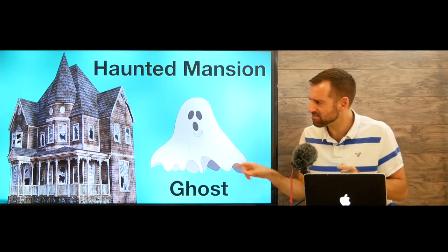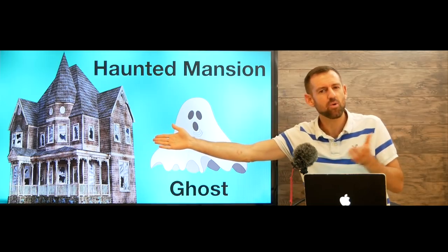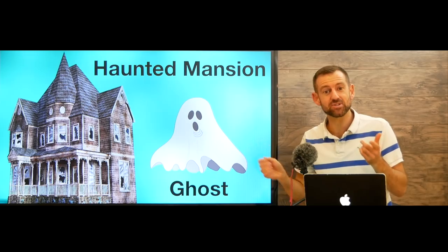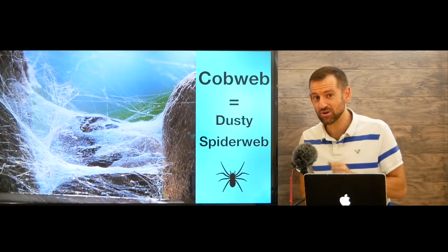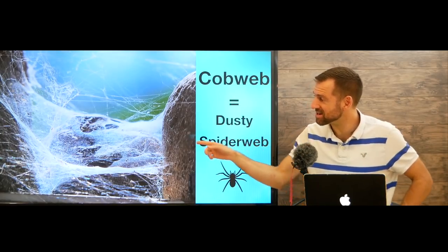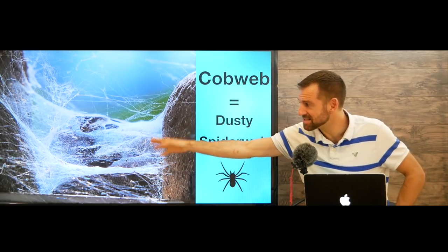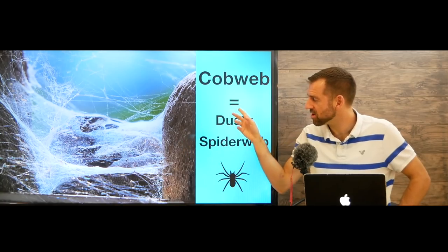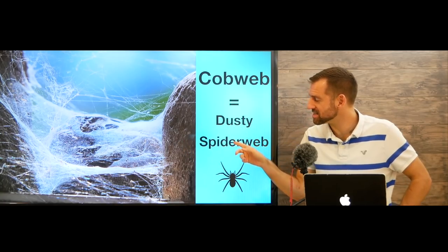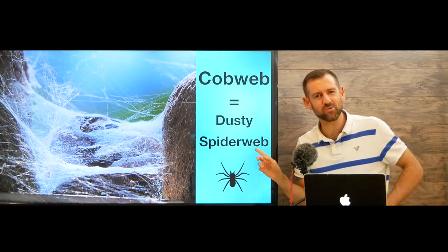Now, if you would go into a haunted house, what would you see? What are some things you would see? Well, you would for sure see lots of cobwebs. These things are called cobwebs. Cobwebs are dusty spiderwebs.